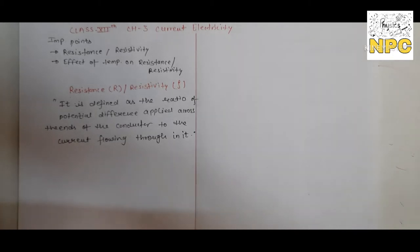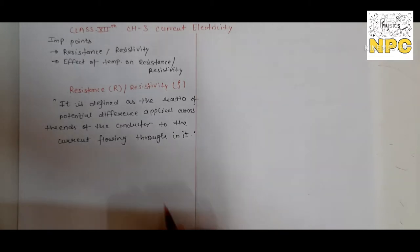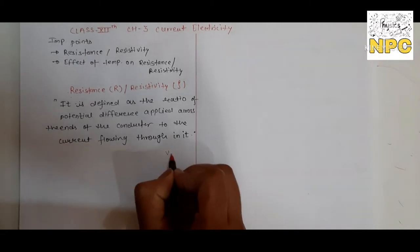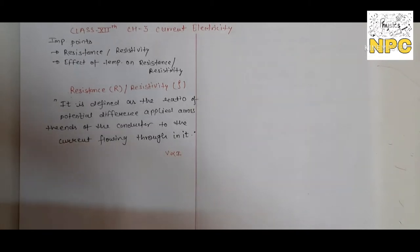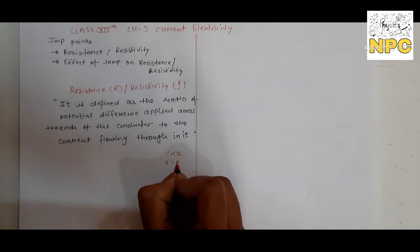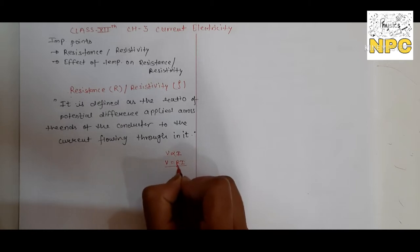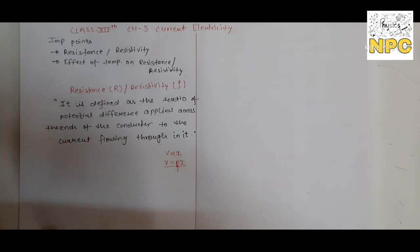What is resistance? In the last video we discussed this. According to Ohm's law, resistance is constant. Here we have V is directly proportional to I. This formula was generated: V is equal to RI, where R is constant.